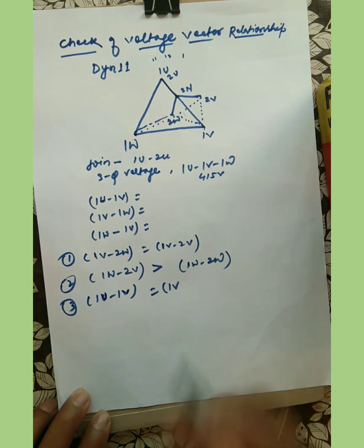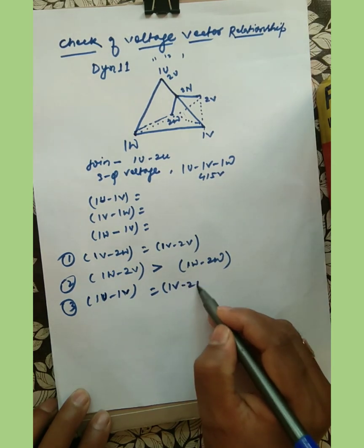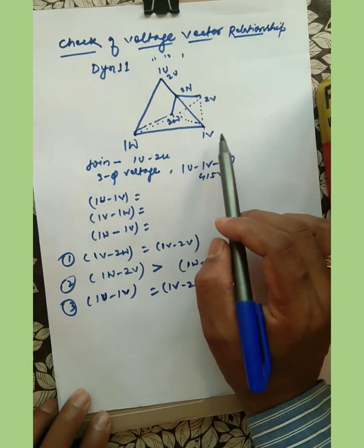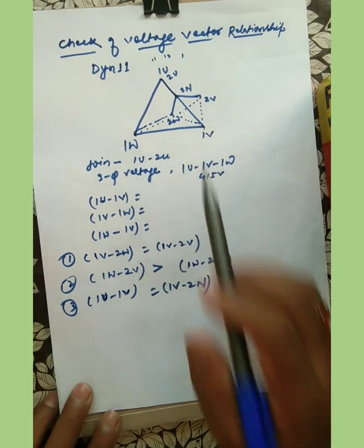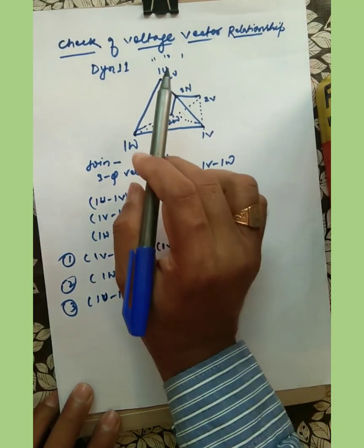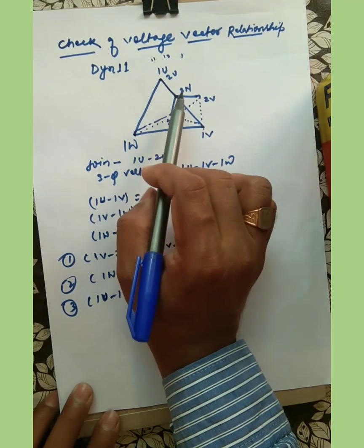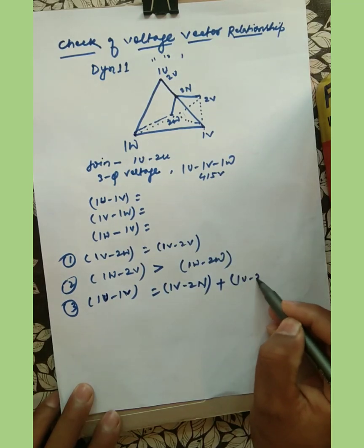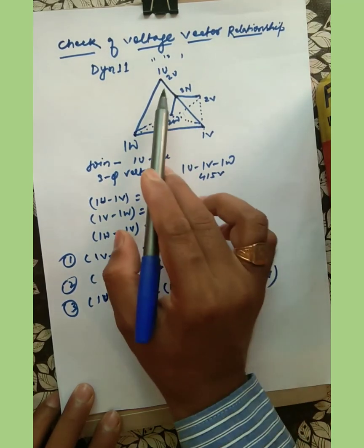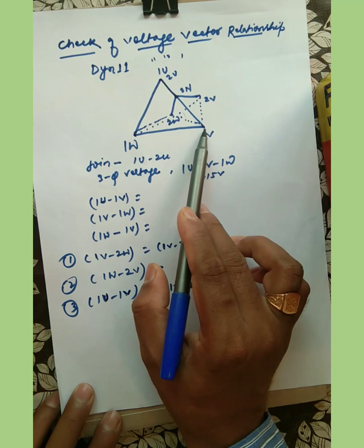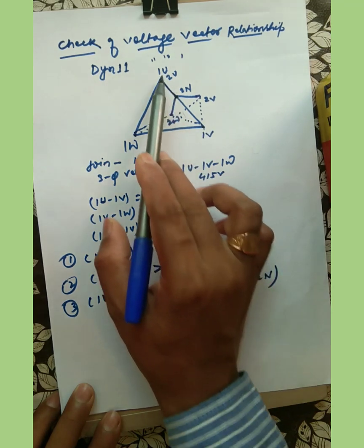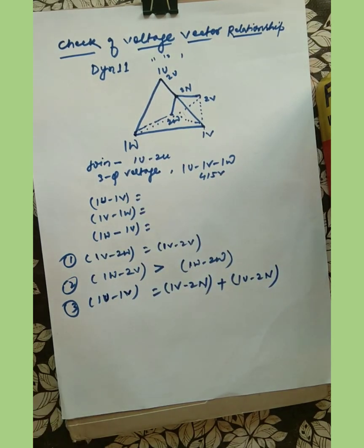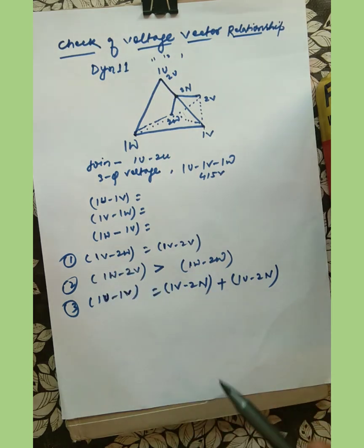The third relationship is that the voltage between 1W and 2N plus the voltage between 1V and 2N should equal the primary line voltage 1U-1V. If we verify these three equations, then we can prove that our vector group is DYN11. Now I am going to show the test result.